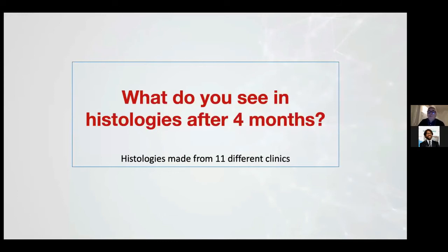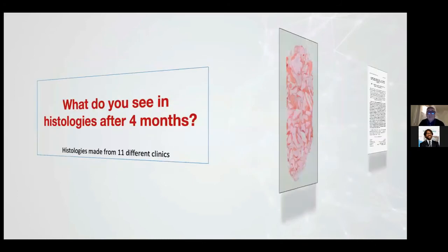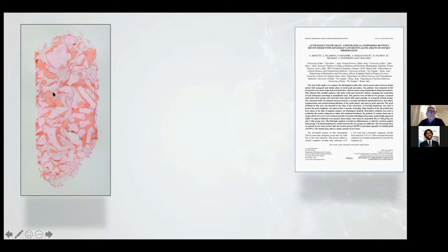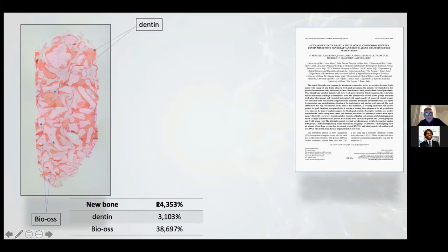What do you see in histologies after follow-up? These histologies were made from 11 different clinics. In this alveolar socket preservation, we inserted 50% xenograft material (in pink) and 50% dentine. After four months, we have new bone 24%, dentine was 3%, and xenograft was 38%.